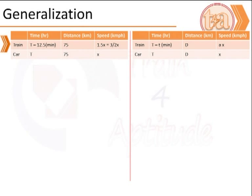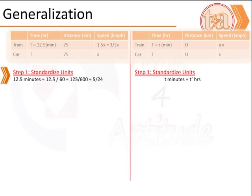To generalize the problem, we assume the speed of the train would be A times the speed of the car, that is AX. The time of stopping of the train is small t minutes. The next step in generalization is to convert the time in minutes to hours. We shall represent that by t dash hours.